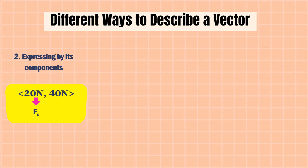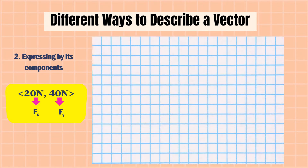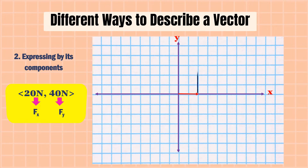For example, F sub x is 20 newtons and F sub y is 40 newtons. If we draw it in our graph, it looks like this. As you can see, all the components are positive, so the vector lies in the first quadrant.